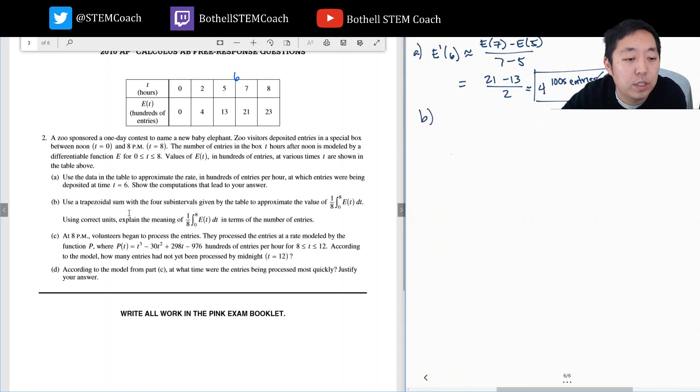Use a trapezoid sum with the four sub-intervals given to approximate the value. Use correct units to explain the meaning of this. Okay, so this is an average value, right? This is the standard formula for average value. I'm gonna add up the area under it and I'm gonna divide by the width of the interval.